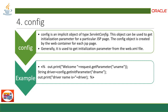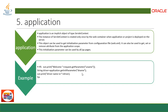`config` is an implicit object of type ServletConfig. This object can be used to get initialization parameters for a particular JSP page. The config object is created by the web container for each JSP page, and is generally used to get initialization parameters from the web.xml file. All you need to do is call `config.getInitParameter()` — the same method used with ServletConfig in servlets.